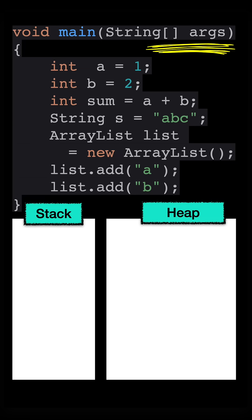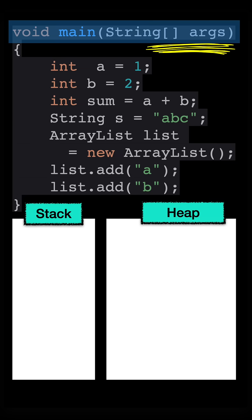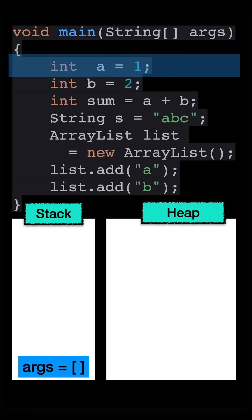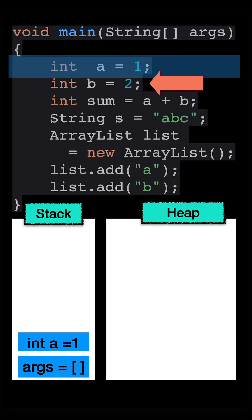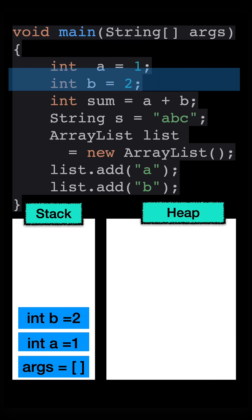When the main thread executes the main method, the method arguments goes into the stack. So here the args goes into the stack, which contains an empty string array. Let's go to the next line. And here we have a local variable a. And as I said, all our local variable goes into the stack like a and b.